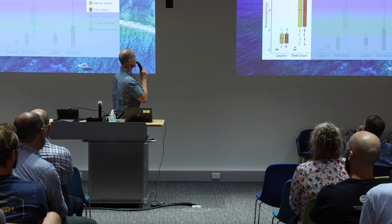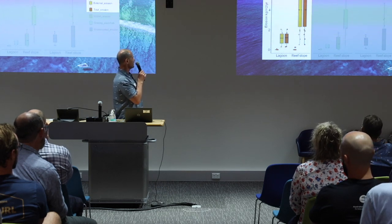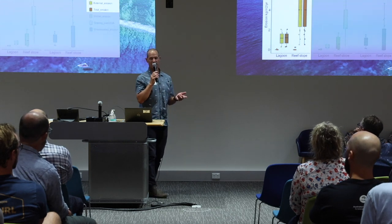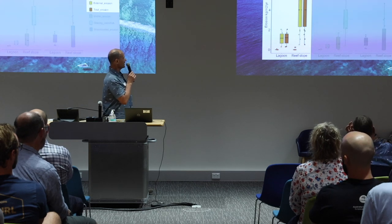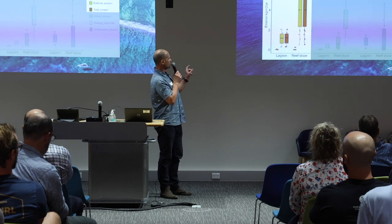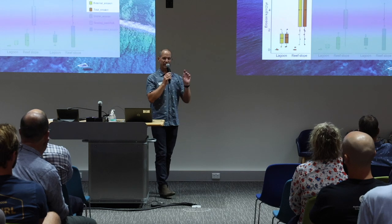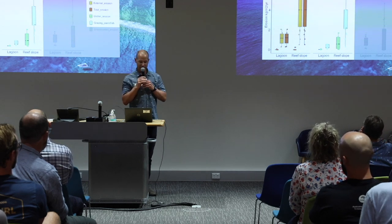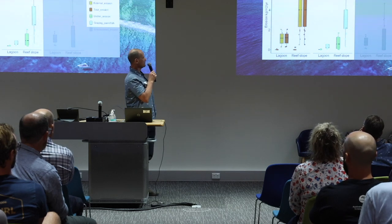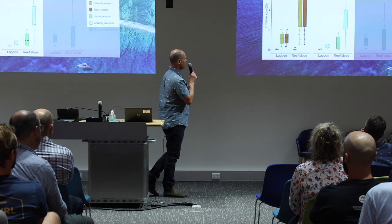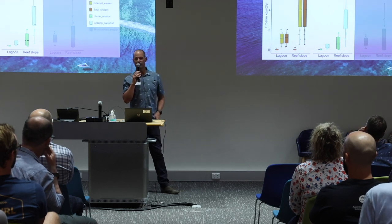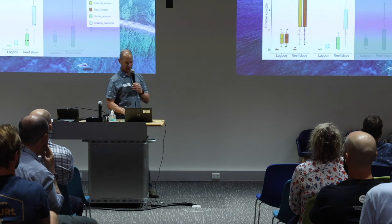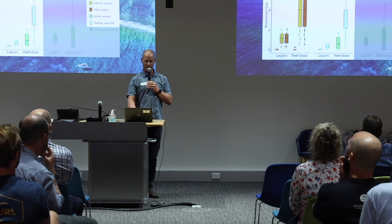Looking at the direct estimates from the coral blocks: erosion rate in kilograms per metre squared per year was about three times higher on the reef slope than in the lagoon. Macro borers — large internal borers — were comparatively low relative to external erosion. When we add the indirect estimates for urchins and parrotfish, erosion estimates were again higher on the reef slope than in the lagoon. Parrotfish accounted for about 60% of all direct erosion on the blocks, compared to urchins at between 15 and 17%.